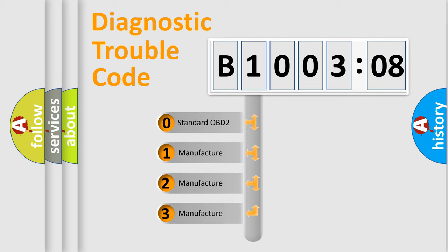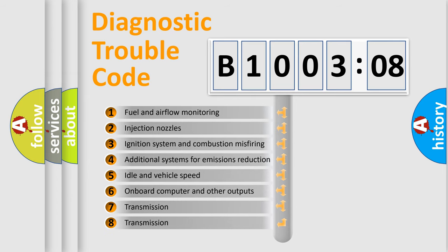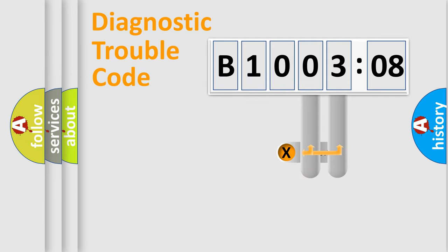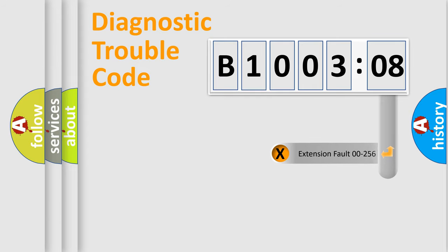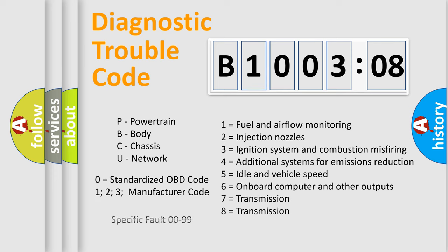If the second character is expressed as zero, it is a standardized error. In the case of numbers 1, 2, or 3, it is a more specific expression of a car-specific error. The third character specifies a subset of errors. This distribution is valid only for the standardized DTC code. Only the last two characters define the specific fault of the group. The add-on to the error code serves to specify the status in more detail — for example, a short to the ground. Such a division is valid only if the second character is expressed by the number zero.